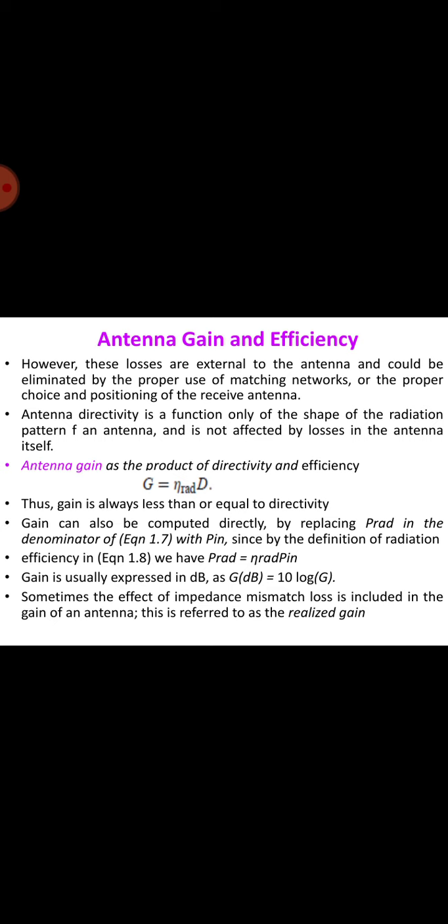Since by the definition of radiation efficiency we have P radians equals eta radians into P in, gain is usually expressed in dB, that is 10 log of G. Sometimes the effect of impedance mismatch losses is included in the gain of the antenna, and this is referred to as the realized gain.